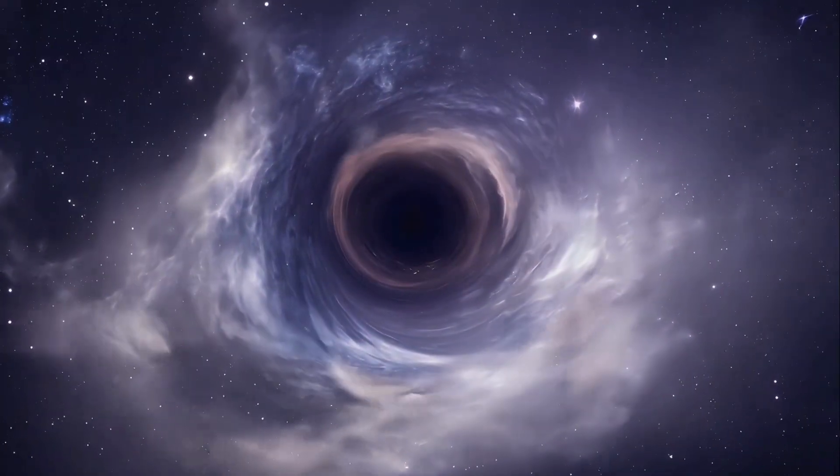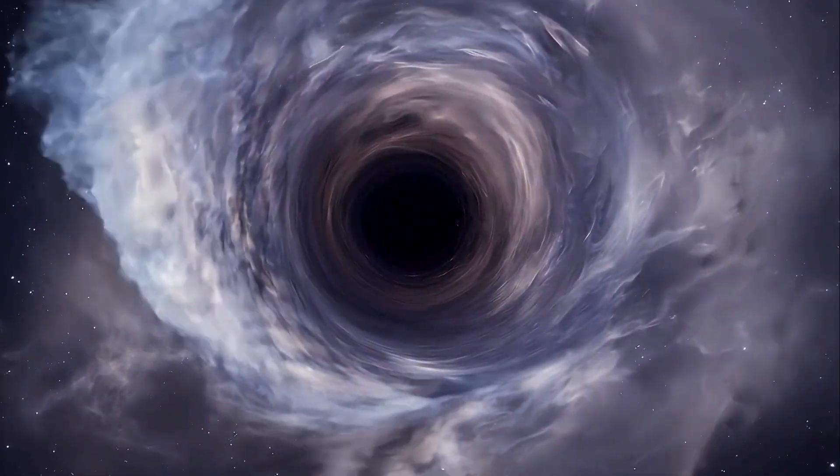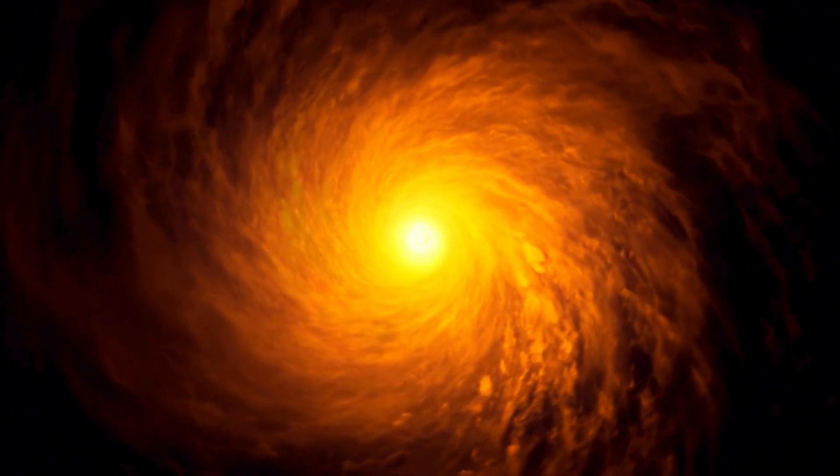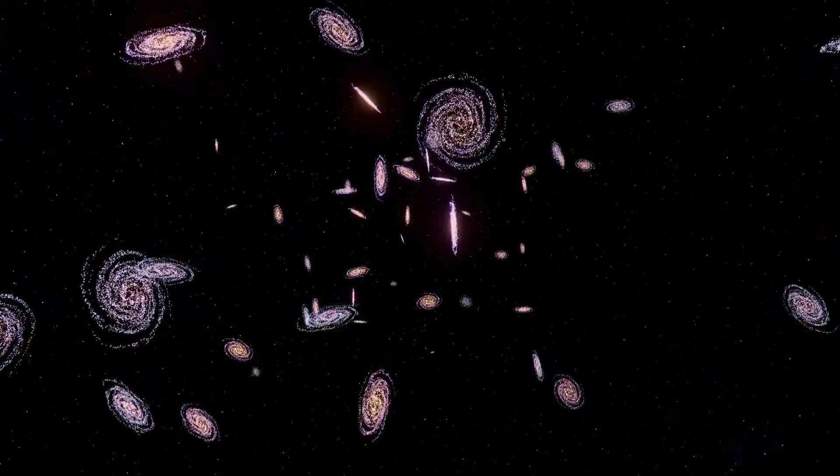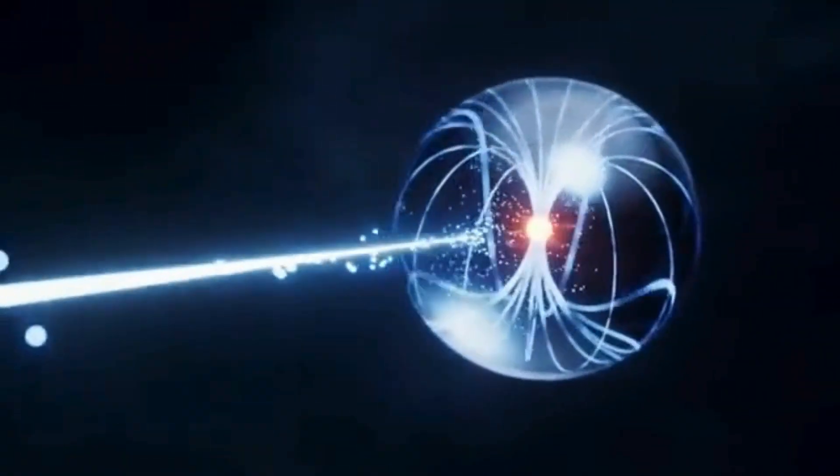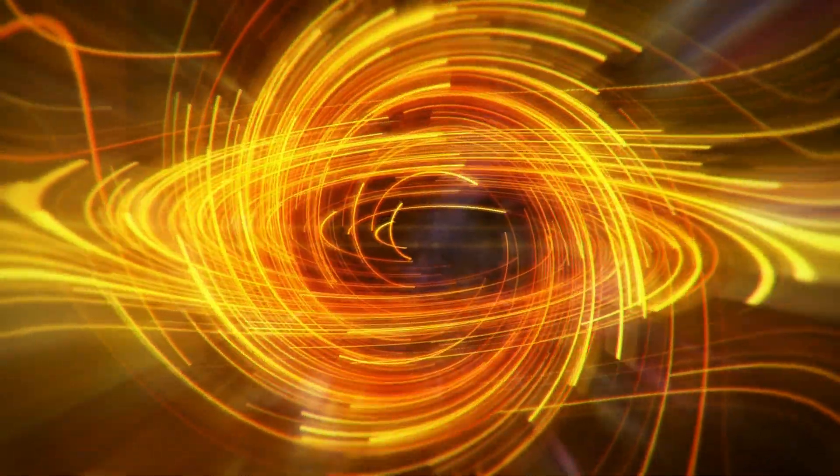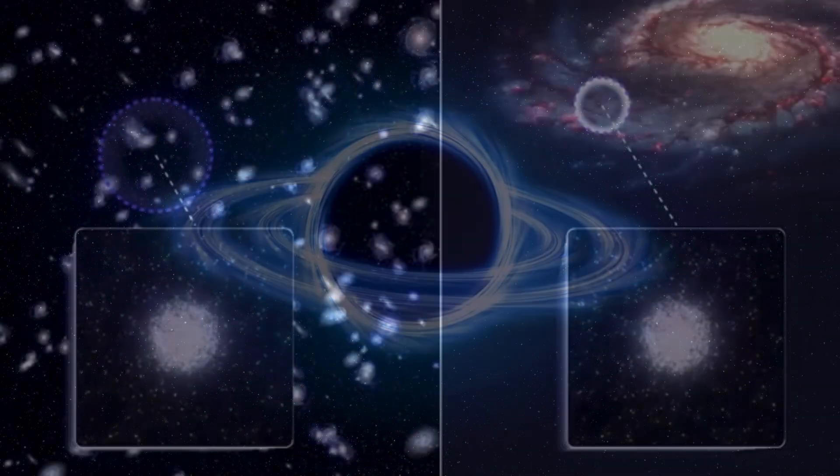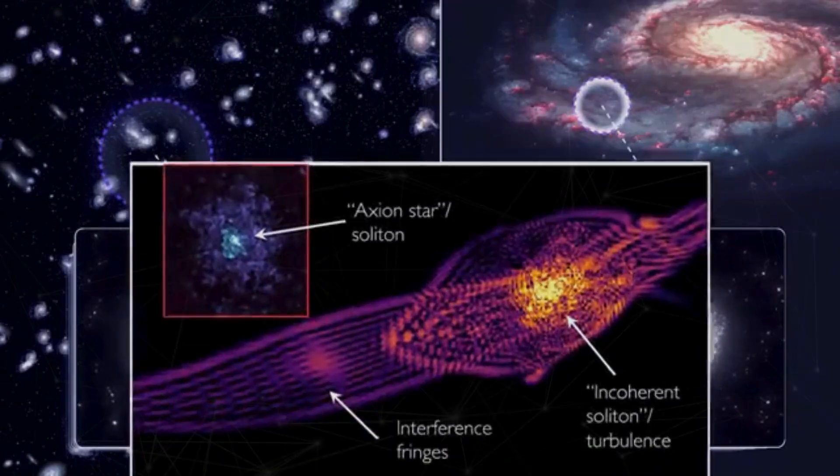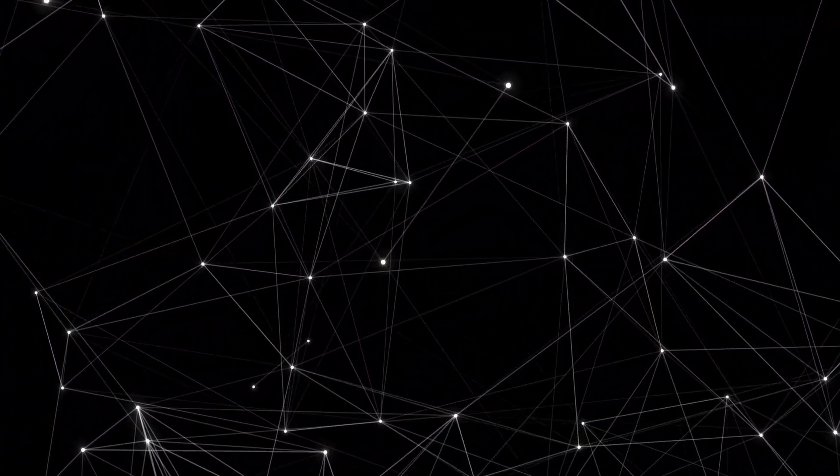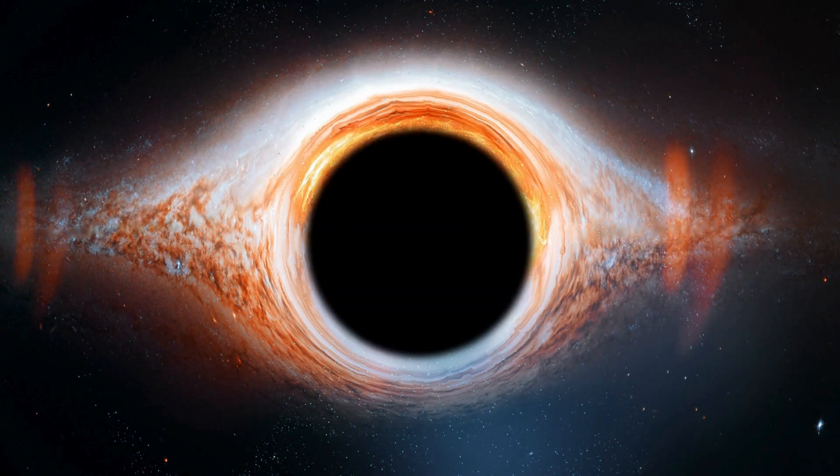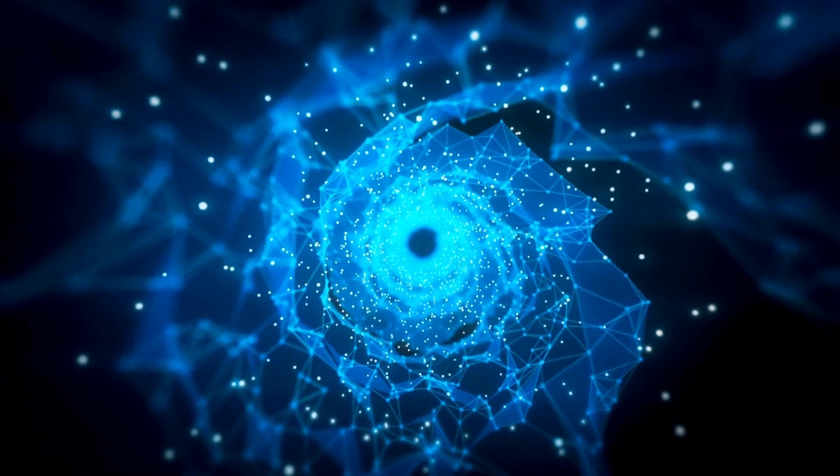The quantum experiments searching for axions. In the last few years, several groundbreaking experiments have begun using quantum technology to search for axions in ways that were previously impossible. These projects aim to amplify the incredibly weak signals that axions are expected to produce, bringing us closer than ever to proving their existence. One of the most promising approaches comes from quantum non-demolition experiments. Unlike traditional detection methods, which often destroy particles in the process of measuring them, quantum non-demolition techniques allow scientists to observe axion-induced effects without interfering with them. This means researchers can repeatedly measure the same system, increasing their chances of detecting an axion's subtle influence.